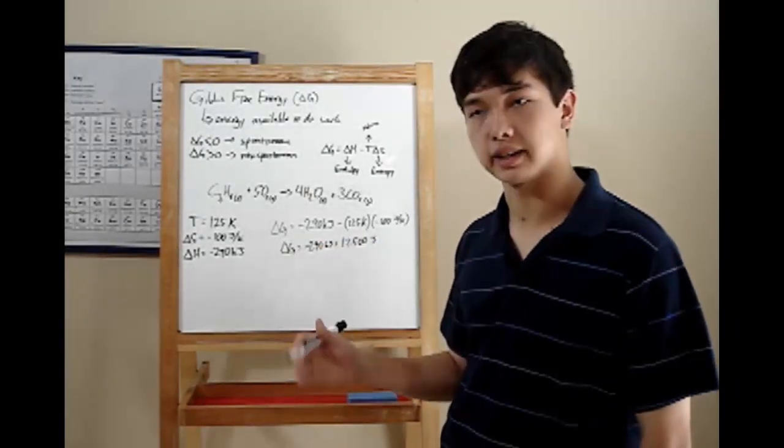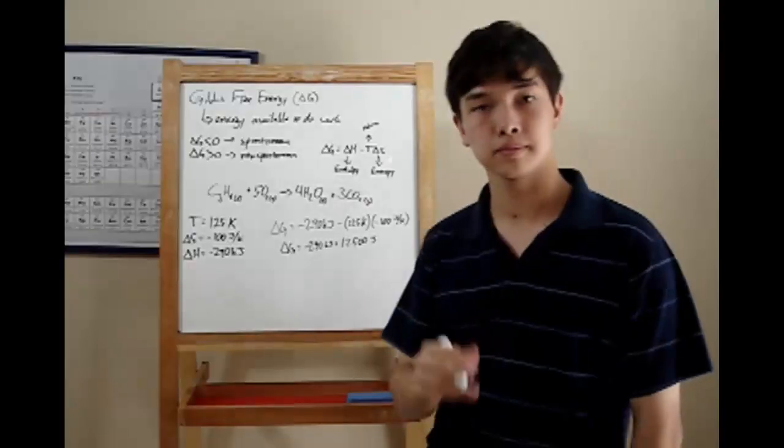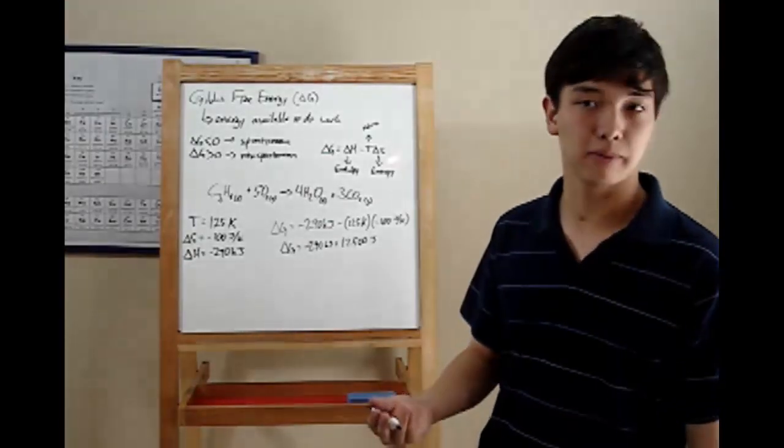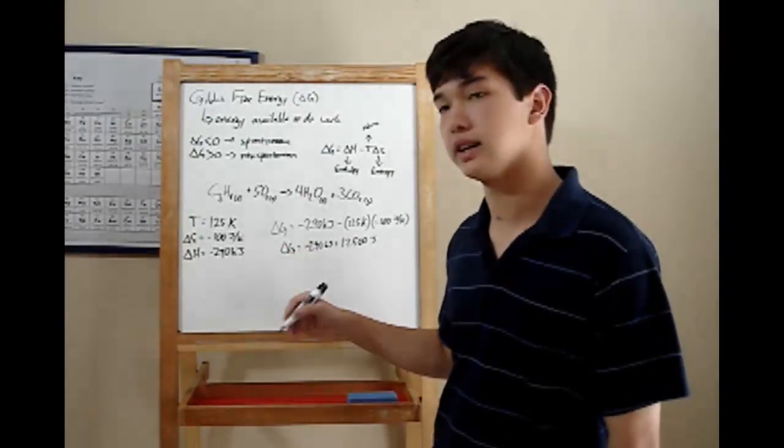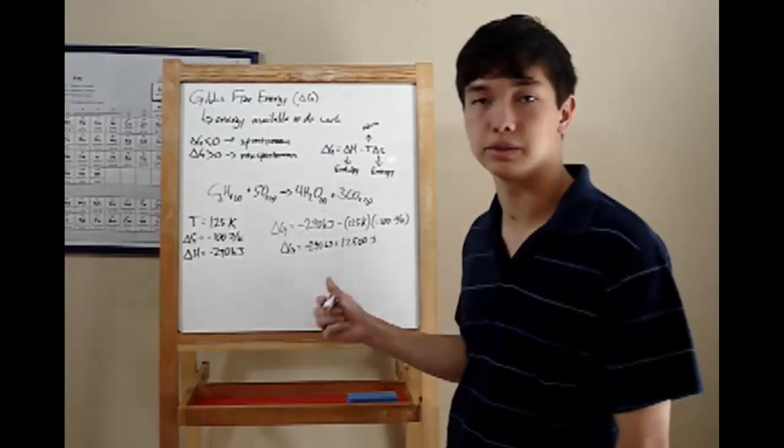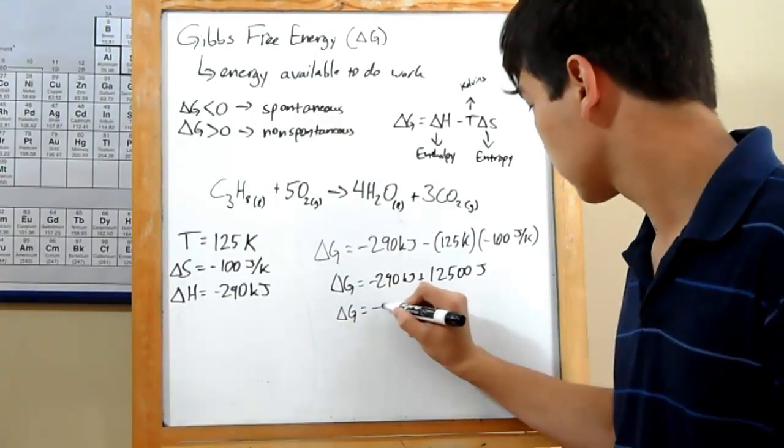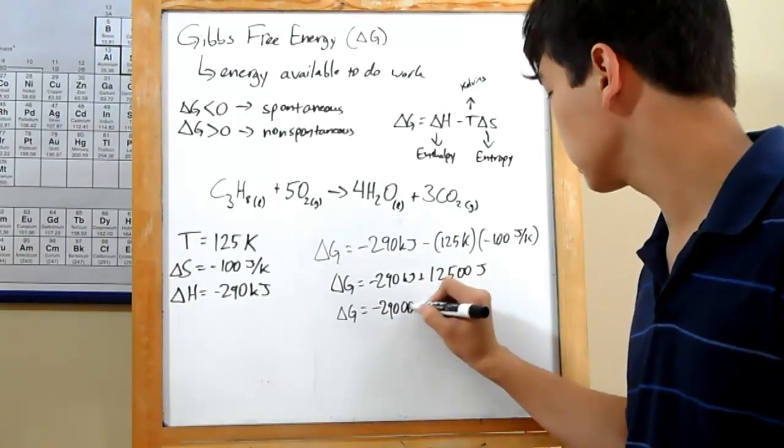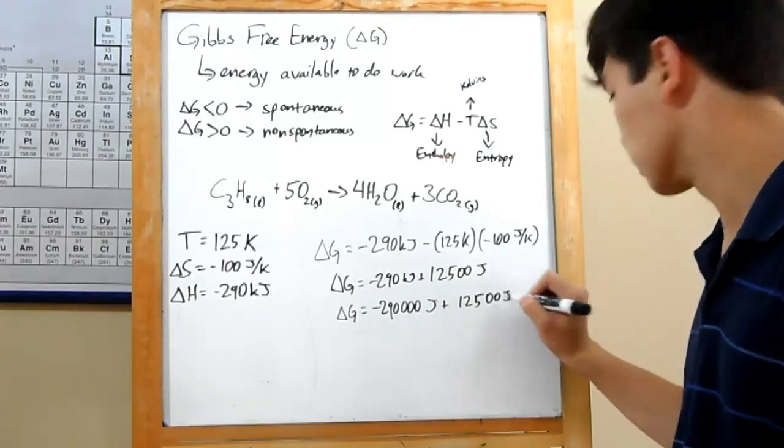Actually, check the units. This one's written in kilojoules and this one's in joules. You need to make sure that your units are the same before you can add. Generally, teachers want your delta G written in joules, so convert kilojoules into joules. All you have to do is multiply by 1,000. Delta G equals negative 290,000 joules plus 12,500 joules.